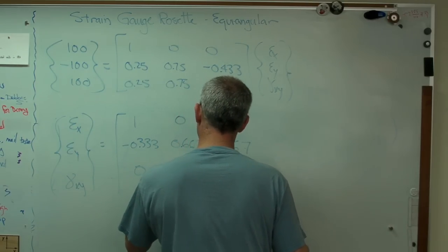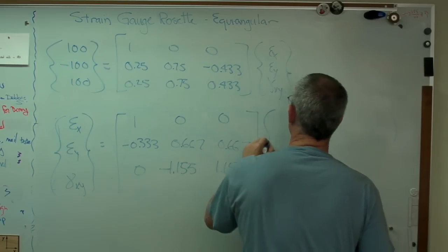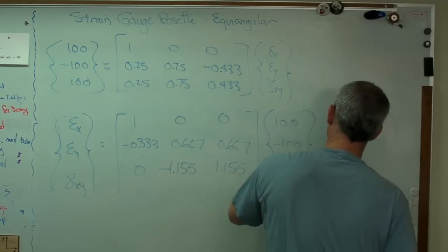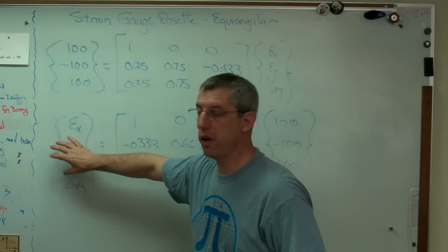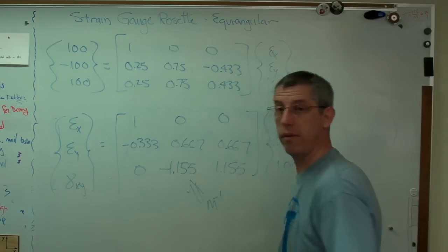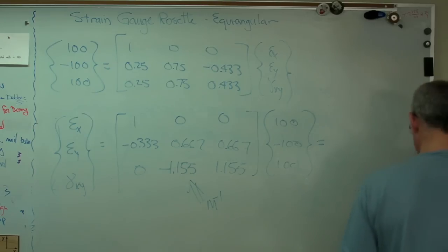0 minus 1.155 and 100 minus 100 and 100. So there we go. There's the stuff I want to know. Now, this is the inverse of M. That thing right there is M to the minus 1. There's the measured strains. And the ones I want to calculate are 100 minus 33.33, which is 100 times a third.